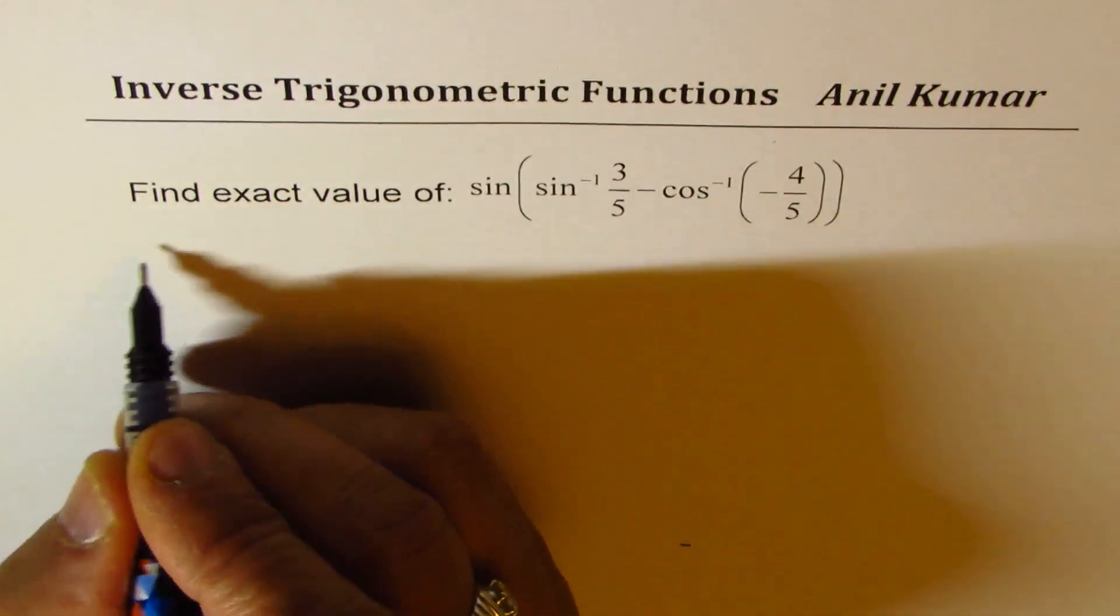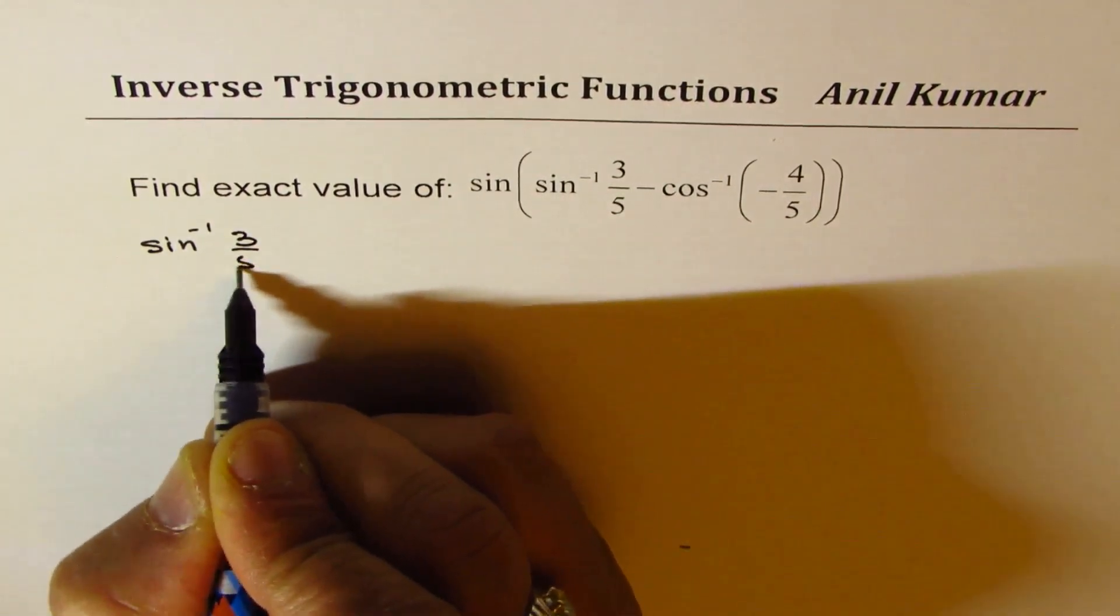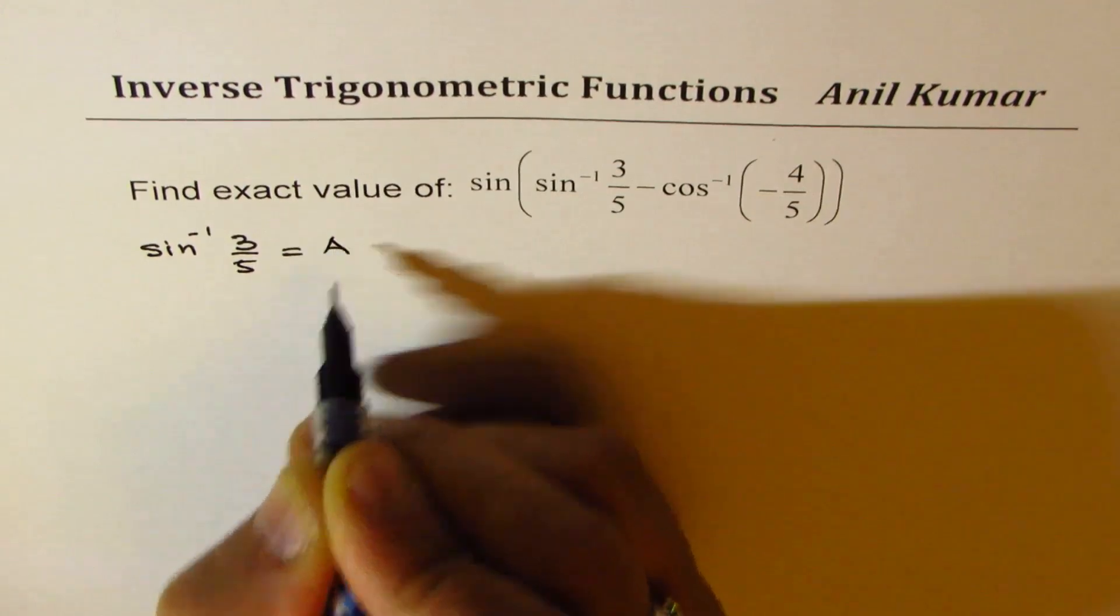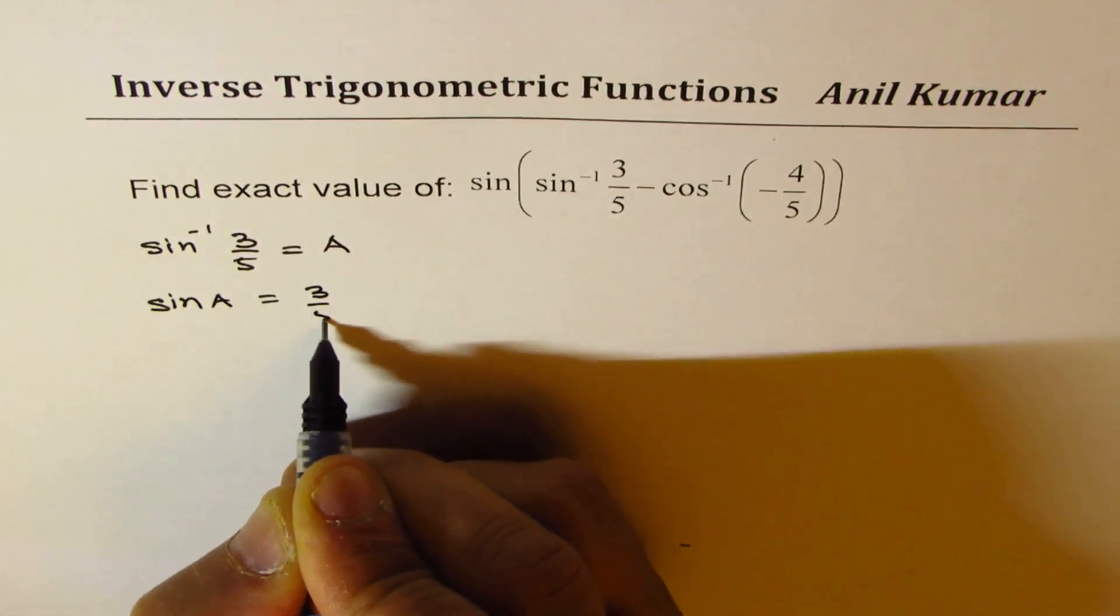So, let us write down sine inverse 3 over 5 as, let's say, A. In that case, sine A will be equal to 3 over 5.